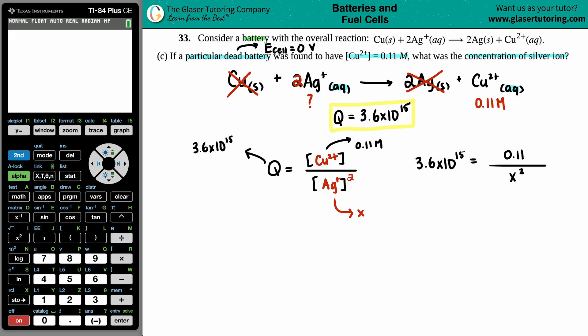Well, we could just easily cross multiply here just to get the X value out of the denominator. Beautiful. And then this one just stays put. So we have 3.6 times 10 to the 15th equals, oh, just kidding. Hold on. 3.6 times 10 to the 15th times X squared equals 0.11. Let's divide on both sides to get X squared by itself divided by 3.6 times 10 to the 15th. This goes bye-bye.